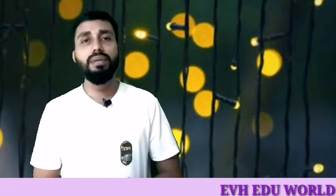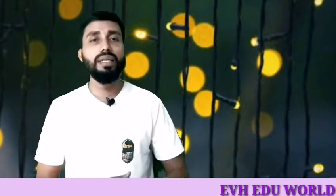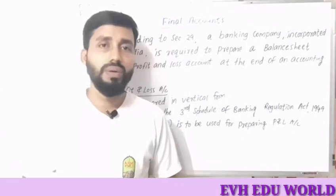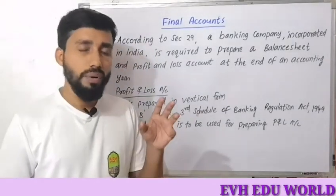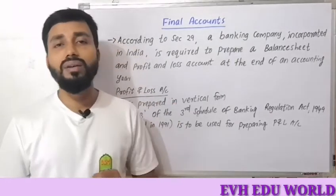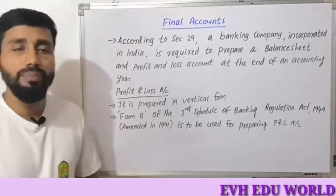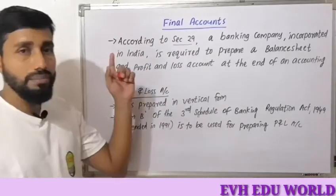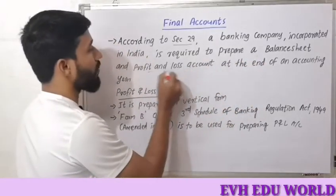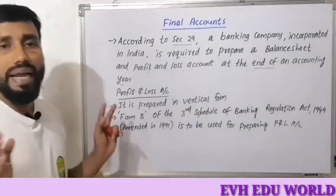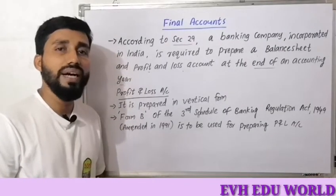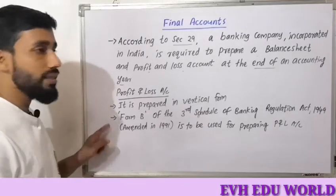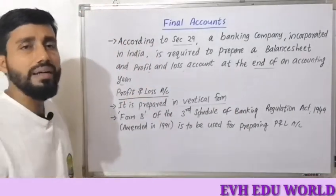According to Corporate Accounting for Banking Companies, the Final Accounts is the format of Profit and Loss Account. In the case of Banking Companies, we normally prepare a Profit and Loss Account. According to Section 29 of the Banking Companies Act, every banking company is required to prepare a Balance Sheet and Profit and Loss Account at the end of the accounting period. This is prepared in a vertical form.